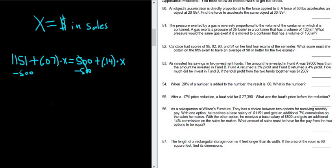1151 minus 500. I'm not going to take any chances. I'm going to use my calculator. So I got 651 plus 0.07X equals 0.14X.